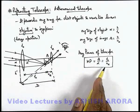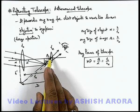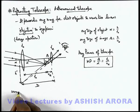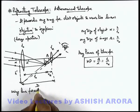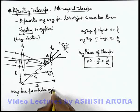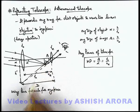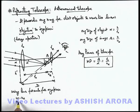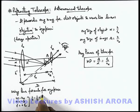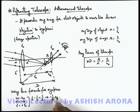If we use lens formula for eyepiece, we can say the object distance is minus u_e, the image distance is minus d, and focal length can be taken as plus f_e. If we use the values in lens formula, 1 by v minus 1 by u is 1 by f, we are getting minus 1 by d plus 1 by u_e equals 1 by f_e. On simplifying, we are getting the value of u_e equal to d f_e over d plus f_e.